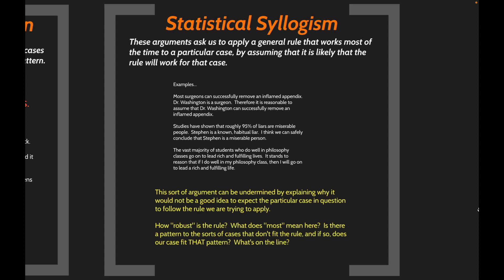Just to refresh our memory, a statistical syllogism is an inductive argument that's trying to argue from some general rule to some particular case. If that general rule is completely universal — something like 'all A's are B's' — we're in deductive territory. But in a statistical syllogism, the general rule is more probabilistic. It's not that all A's are B's; it's more like most A's are B's.